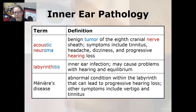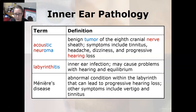And then lastly, we have the inner ear pathology. Acoustic neuroma is a benign tumor of the eighth cranial nerve sheath. The symptoms include tinnitus, which is ringing in the ear, headache, dizziness, and progressive hearing loss. Labyrinthitis is an inner ear infection; it may cause problems with hearing and equilibrium.